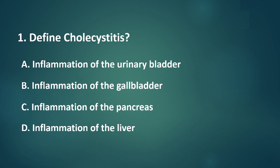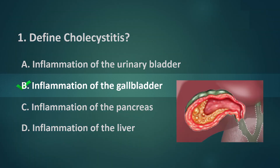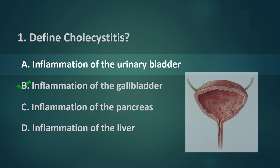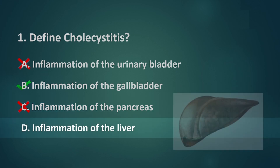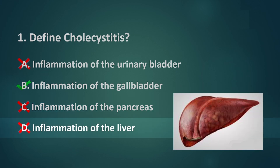The correct answer is letter B: inflammation of the gallbladder. Option A is referring to cystitis, the inflammation of the urinary bladder due to infections such as UTI and other urinary diseases. Option C is referring to pancreatitis. Option D is referring to hepatitis.